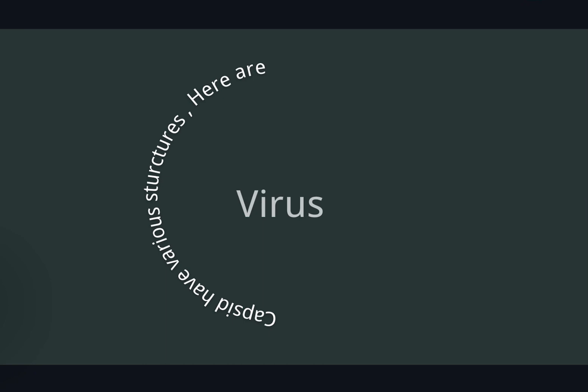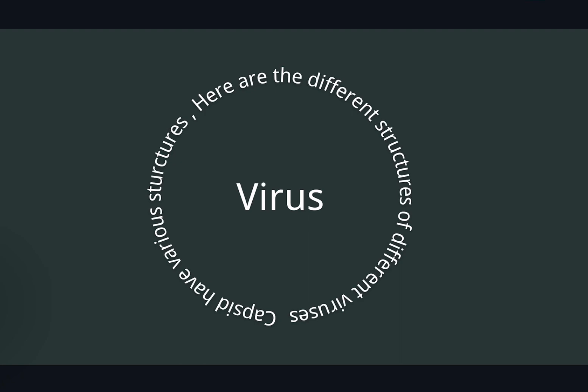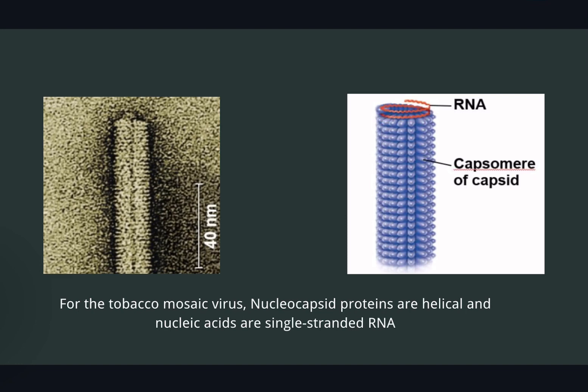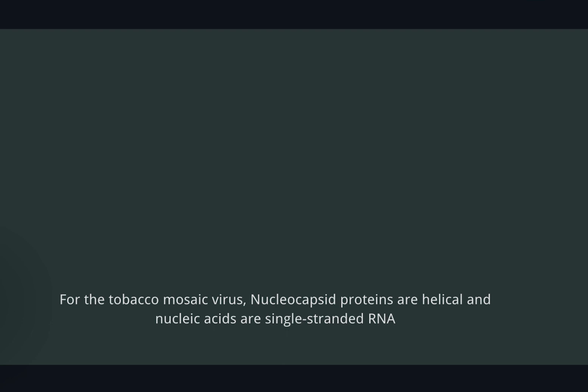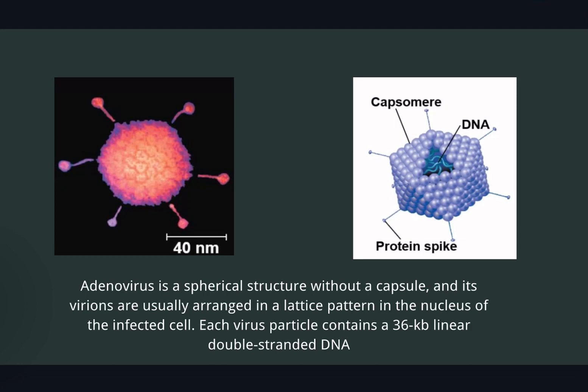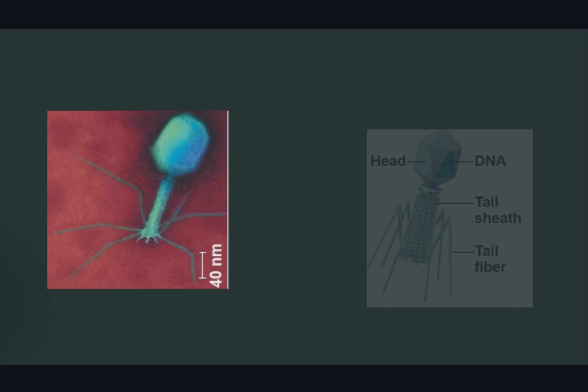Capsids have various structures. Here are the different structures of different viruses. For the tobacco mosaic virus, nucleocapsid proteins are helical and nucleic acids are single-stranded RNA. Adenovirus is a spherical structure without a capsule, and its variants are usually arranged in a lattice pattern in the nucleus of the infected cell. Each virus particle contains a 36 kb linear double-stranded DNA.